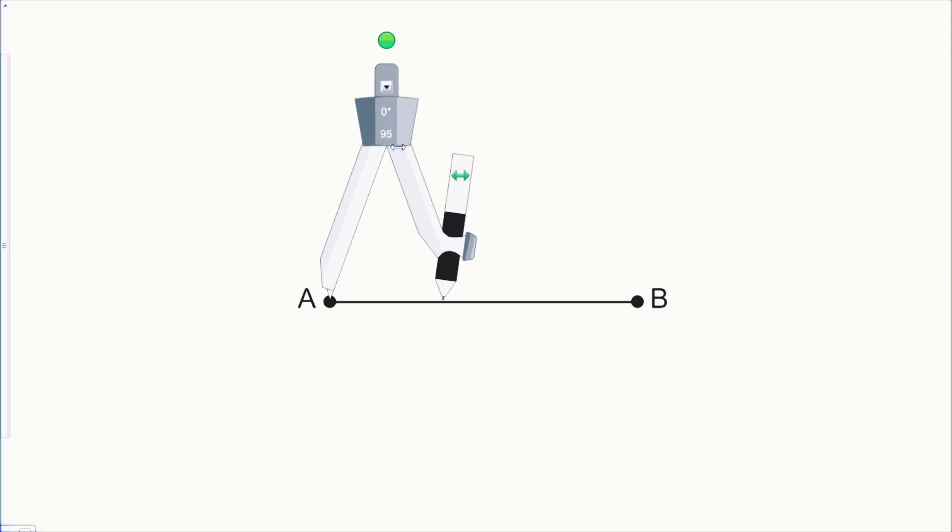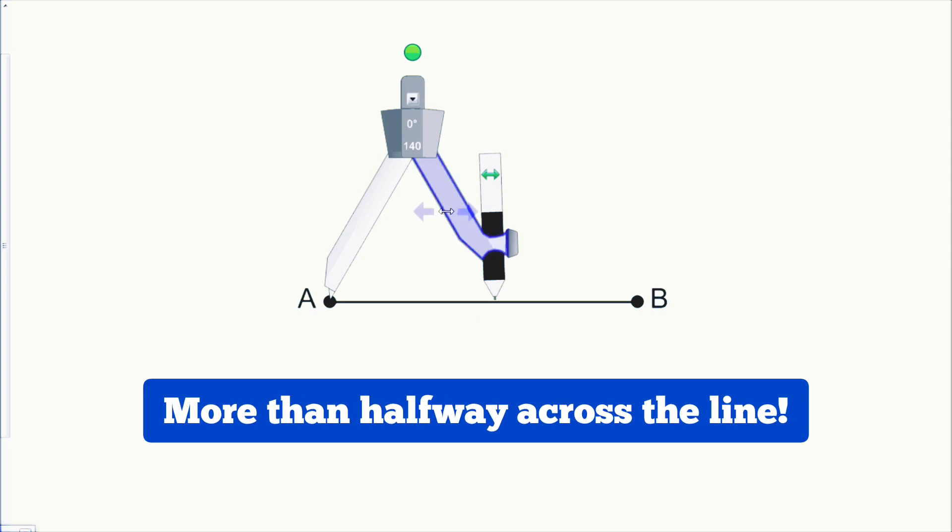First things first, let's put the pin of the compass on A and the next thing you want to do is extend the compass until it's more than halfway across the line.